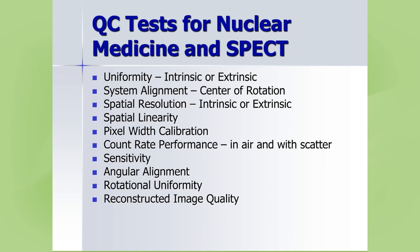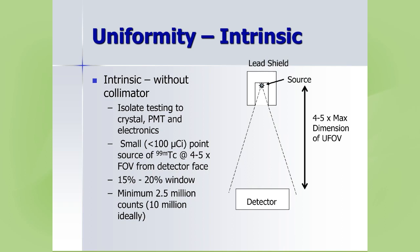Moving to NucMed/SPECT: standard tests include uniformity, system alignment or center of rotation, intrinsic or extrinsic spatial resolution and linearity, plus others performed more ad hoc. For intrinsic uniformity, we pull the collimators off to isolate the crystal, PMT, and electronics. We make up a small less-than-100-microcurie point source of tech, positioned four to five field-of-views away from the detector face, and acquire a minimum of 2.5 million counts — ideally closer to 10 million — with a 15–20% energy window.